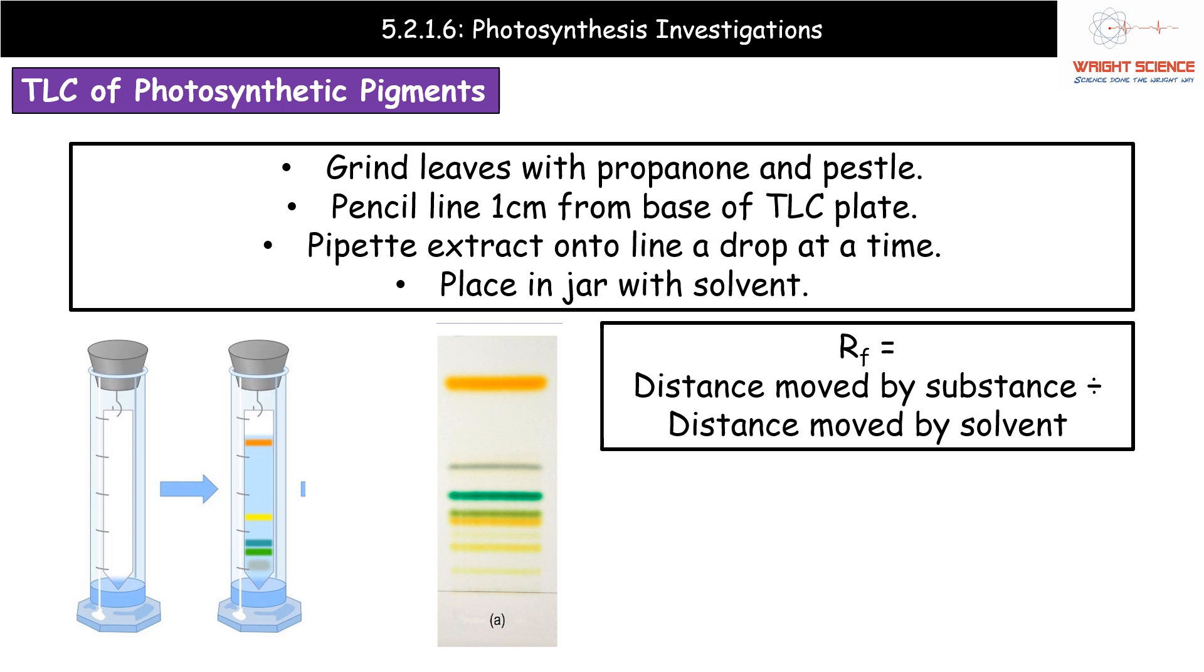We're then going to draw a little pencil line about a centimetre up from the base of your TLC plate - TLC stands for thin layer chromatography. And then we're going to use our pipette to put a little bit of our extract on that pencil line. The idea is that you do it a single drop at a time, let it dry, add another little drop. This is usually using a capillary tube, the idea being to have it as small as possible. Once it's all dry, you place it in your jar with the solvent, and then you wait. You're going to wait as that solvent moves up your TLC plate, and you would remove it when it reaches near the top. Don't let it run off the top of the plate.